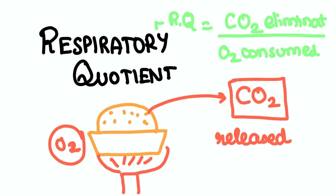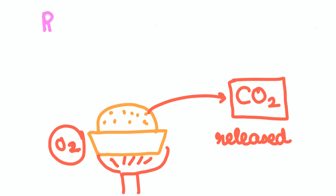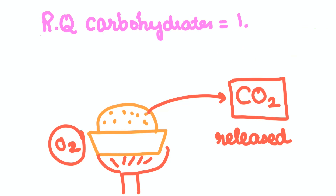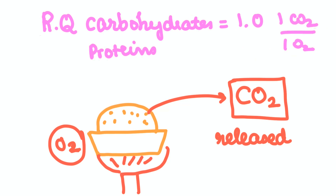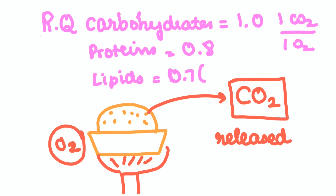For carbohydrates, the respiratory quotient is 1.0, meaning one carbon dioxide will be produced for every oxygen used. For proteins it's 0.8, and for lipids it's 0.7 — the least of all three macronutrients. Now let's see how to utilize this respiratory quotient concept in diet for a COPD patient.